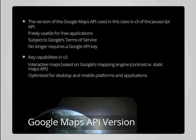For this class, we are working with version 3.0 of Google's JavaScript API. Google also provides several other APIs, but we will be using their JavaScript API. The JavaScript API is freely usable for free applications, though there are limitations for applications users have to pay for. It is subject to Google's terms of service, which they have the right to change. More recently, they've added limitations on the number of map requests that can be submitted per day, causing some developers to rethink their use of Google Maps.